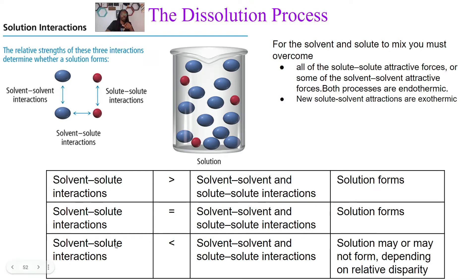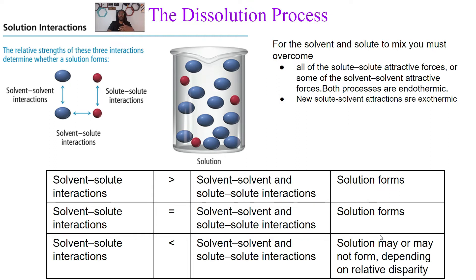However, say the solvent-solute interactions are less than — so we don't have as many of these interactions going on, but we have a lot more interactions with our solvent-solvent and solute-solute. If that is the case, a solution may or may not form — but it's probably not going to form. When this happens, you're going to get layering occurring between the solute and solvent, depending on if it's a liquid-liquid or solid-liquid system — the solid just may not dissolve in that liquid.